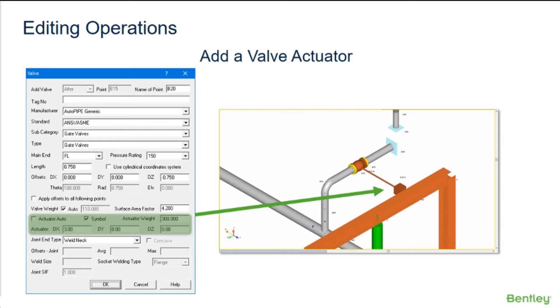When the symbol option is checked, the actuator symbol will change to a square box with the actuator point being B15D in the middle of the box.